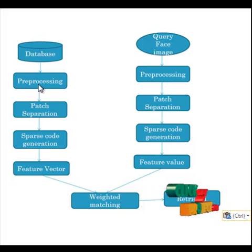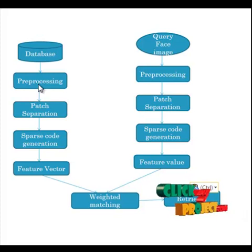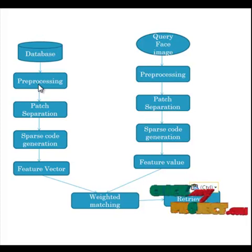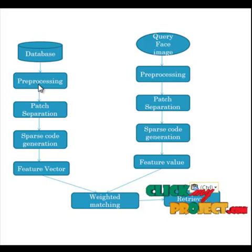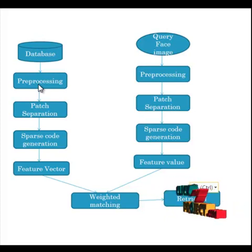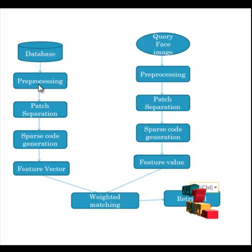After filtering the noise, it will go to the face detection step. In face detection, Active Shape Models are used. It is a statistical model of the shape of the object which iteratively deforms to fit to an example of the object in a new image. The shapes are constrained by the point distribution model, which allows the statistical shape model to vary only in the ways seen in the training step.